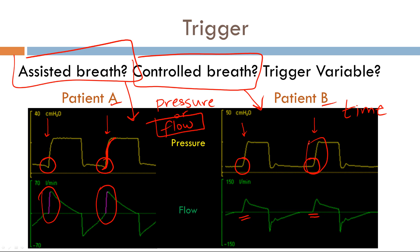On the Puritan Bennett ventilators, on the top left with each breath you will see it says either 'A' for assisted or 'C' for controlled breath. That's it for trigger variables — join us for the next video where we talk about the target variable.